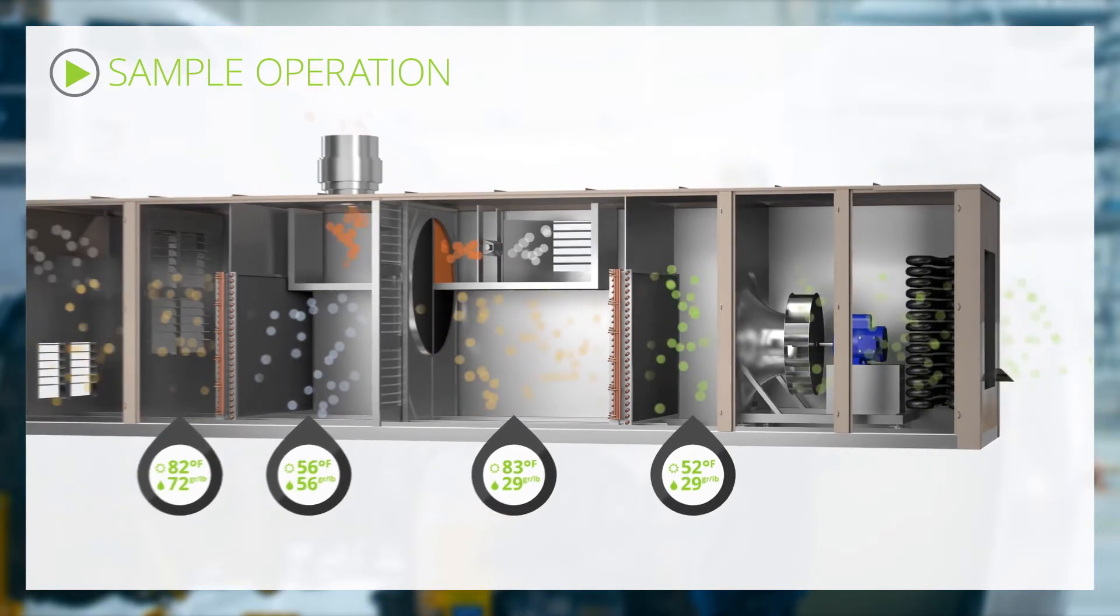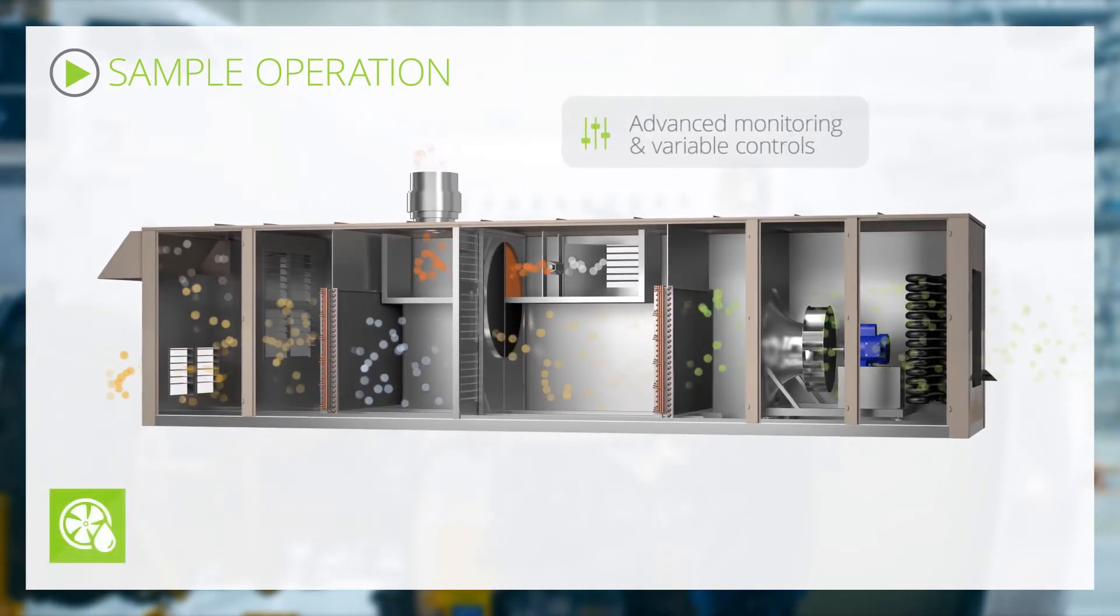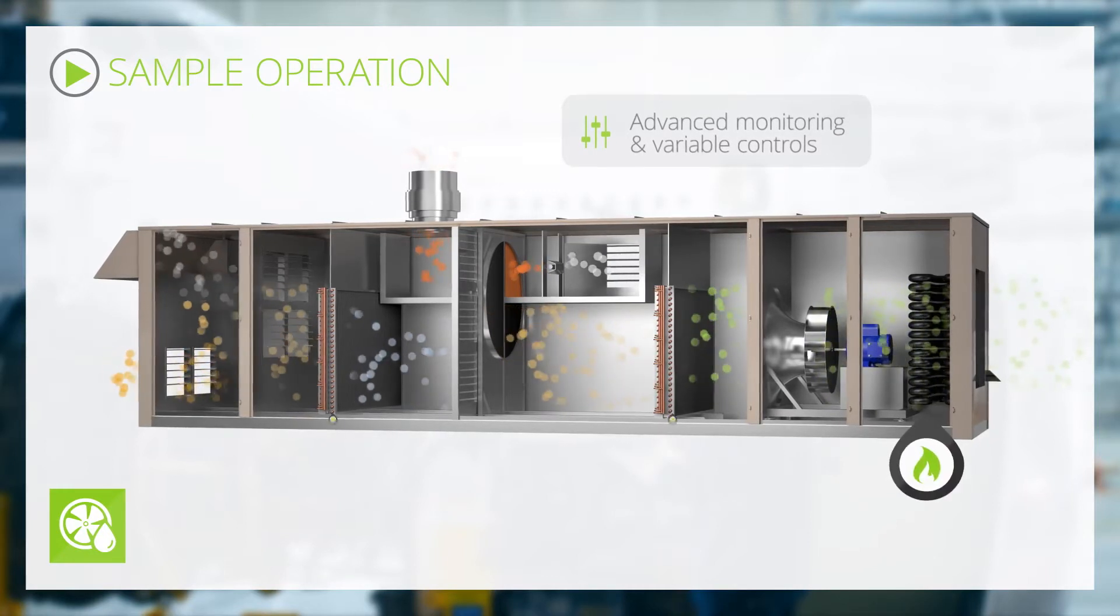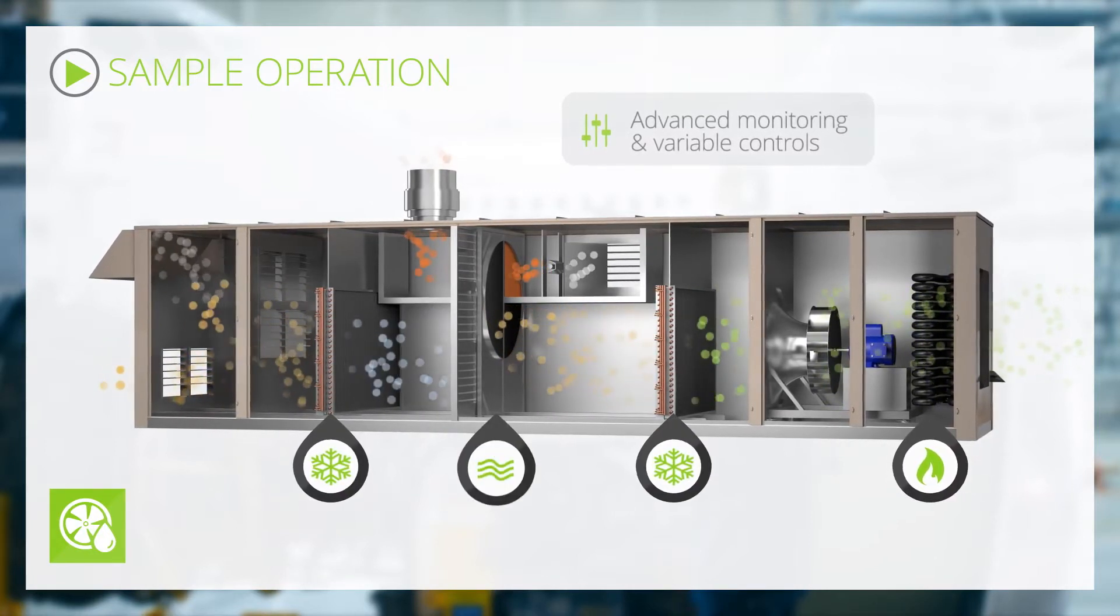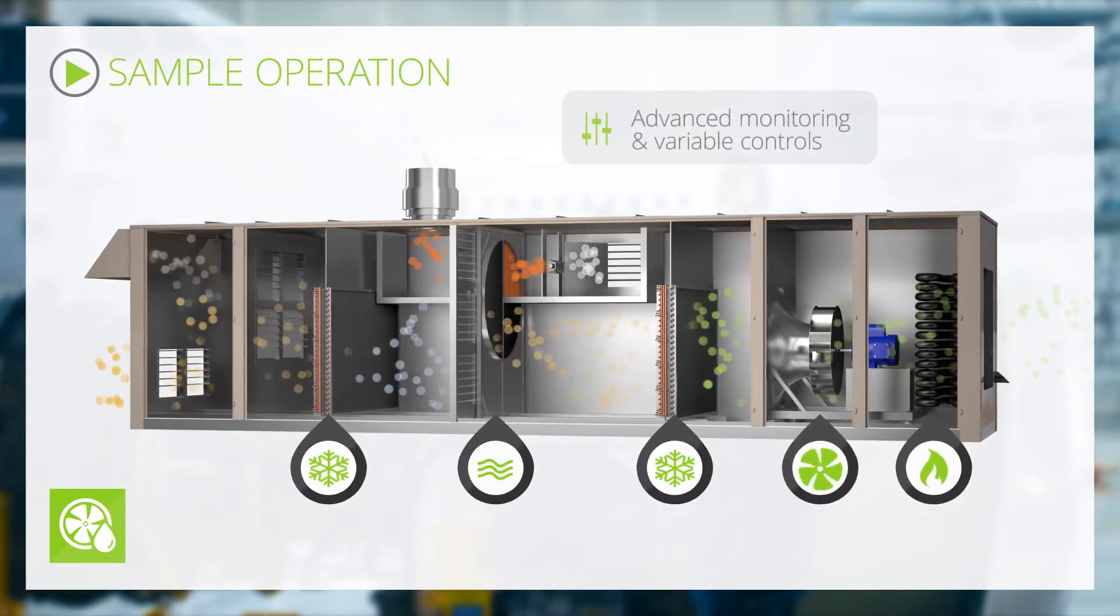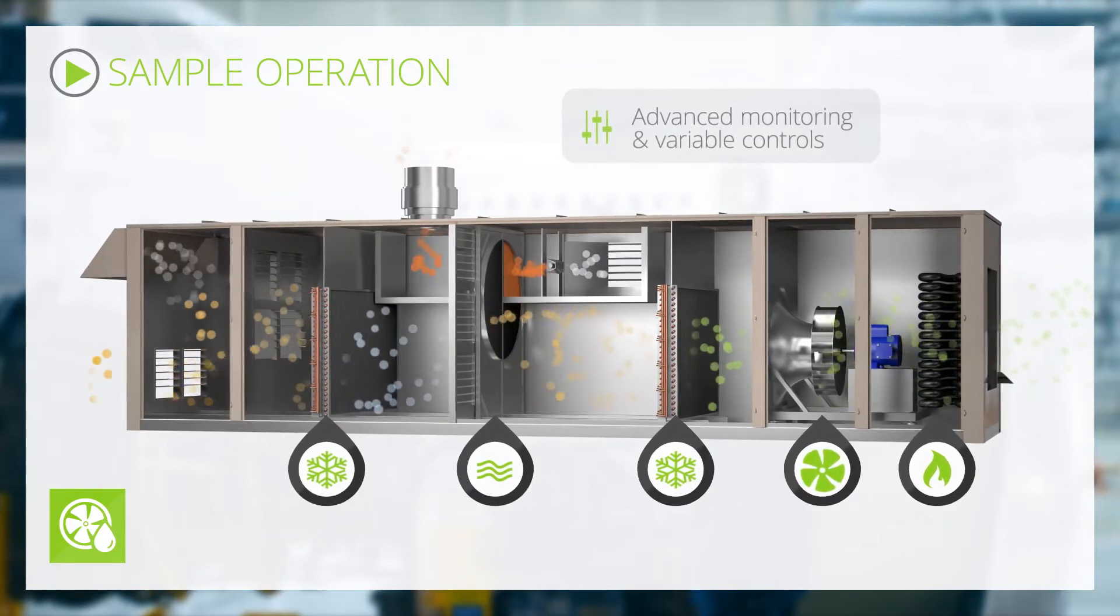Feizen active desiccant technology uses advanced monitoring and variable controls to regulate heating, cooling, airflow across the wheel, and fan power to meet your process needs while using the least energy possible.